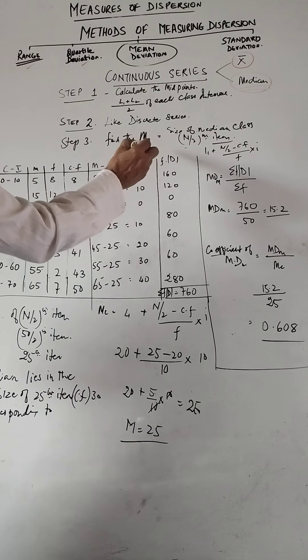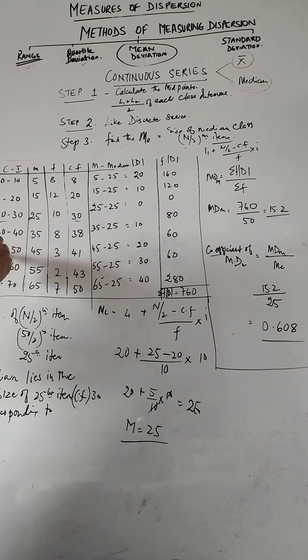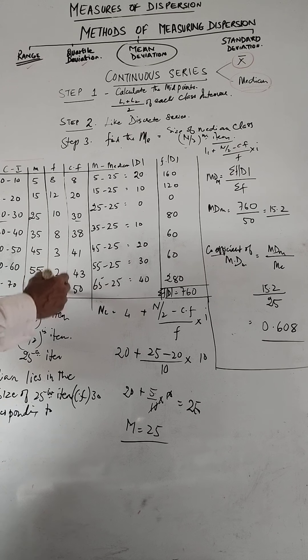Now let's consider this. This is a numerical that we are going to do to find out the mean deviation. Now in this 0 to 10, 10 to 20, 20 to 30, 30 to 40, 40 to 50, 50 to 60, 60 to 70 and these are the frequencies 8, 12, 10, 8, 3, 2 and 7.